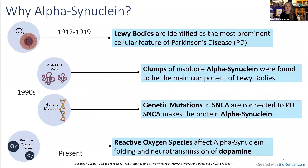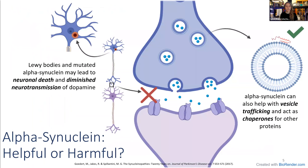Why do we need to focus on alpha-synuclein? In the 1910s, Lewy bodies were identified as the most prominent cellular feature in Parkinson's disease patients. In the 1990s, these clumps of insoluble protein were found to be composed primarily of alpha-synuclein. In parallel, genetic mutations in the gene SNCA were connected to Parkinson's disease, and this gene codes for alpha-synuclein. In recent years, reactive oxygen species have been suggested to affect the folding of alpha-synuclein and the neurotransmission of dopamine. However, is alpha-synuclein helpful or harmful? The answer is both. What we know is that mutated alpha-synuclein is associated with neuronal death, but alpha-synuclein can also help with vesicle trafficking and can even act as a chaperone to help other proteins function.